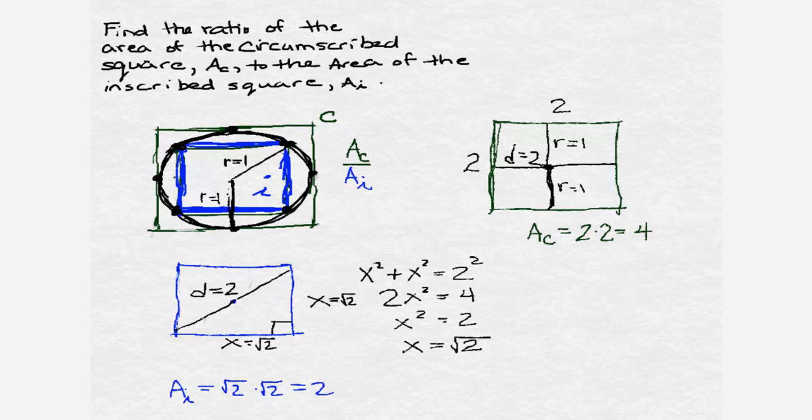This means that our ratio is four to two, which reduces to two to one. Now by working it out this way, I've really only proven that the ratio is two to one when the radius is one, but you can imagine removing that fact and just using r for the radius.